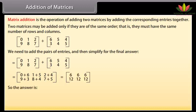So the answer is: first row [6, 6, 6], second row [12, 12, 12].